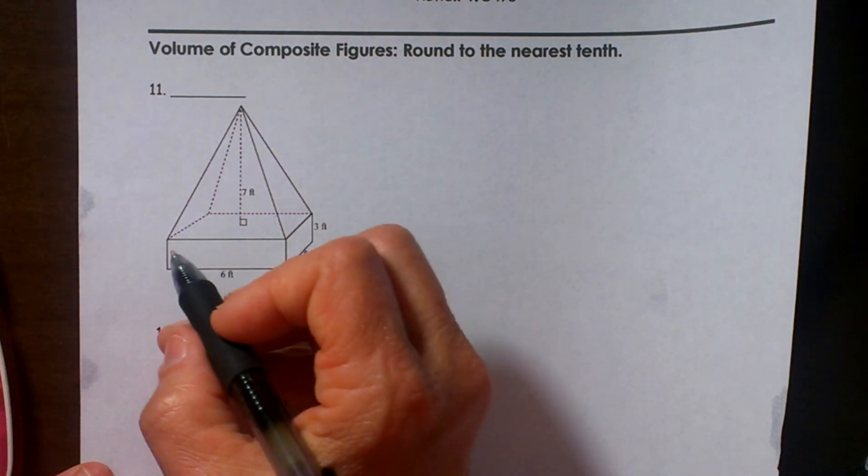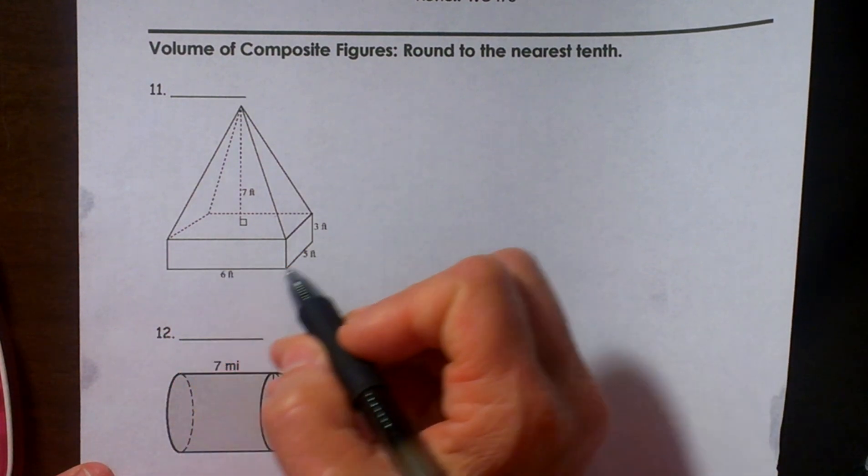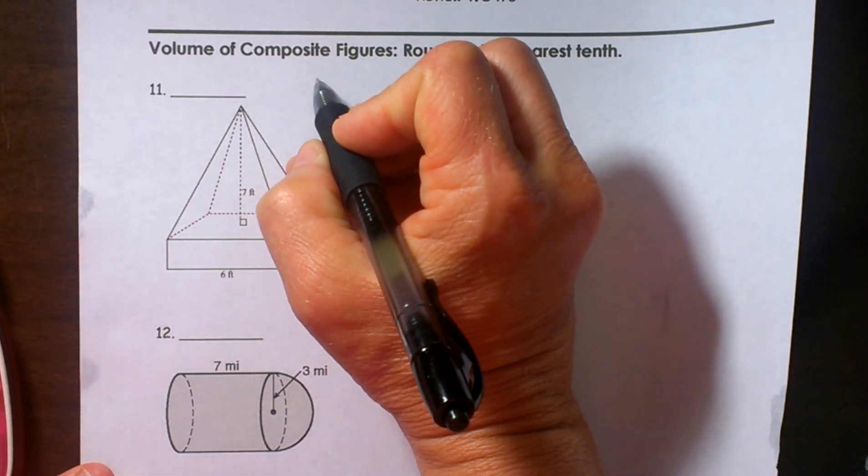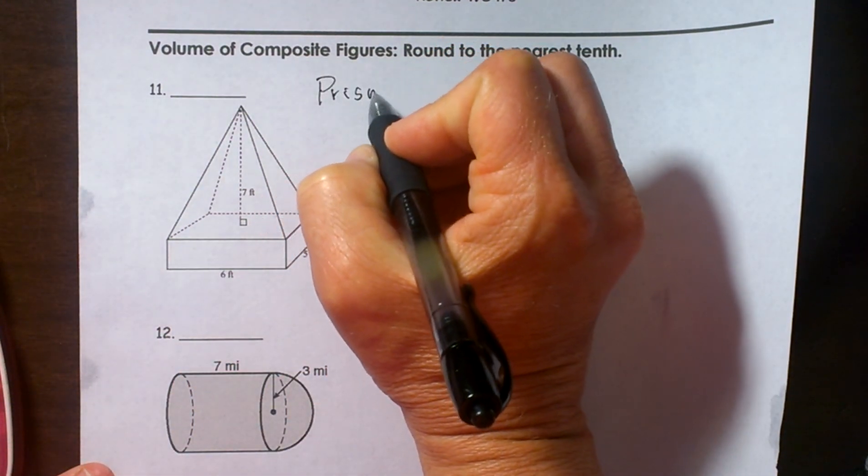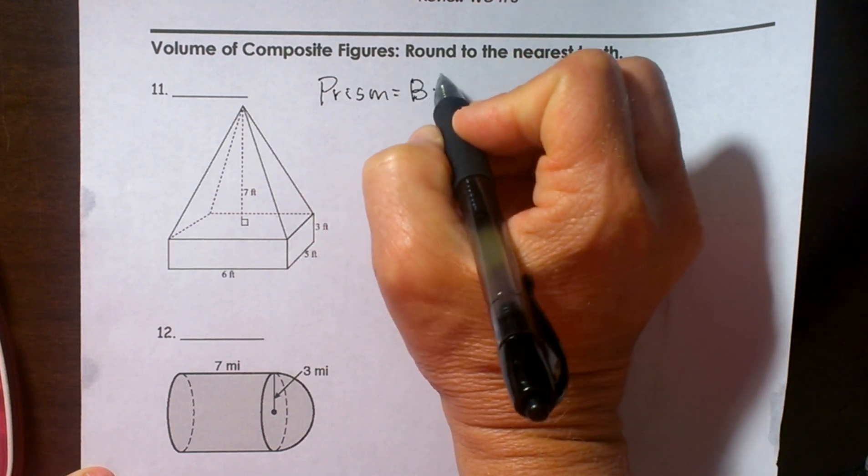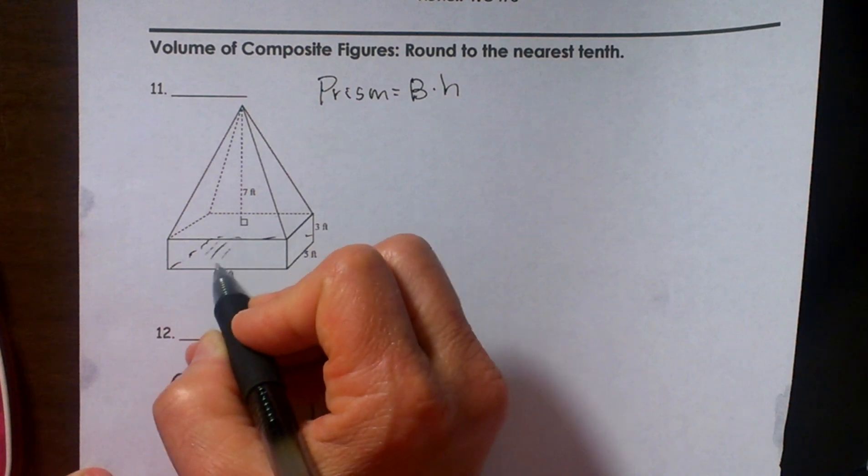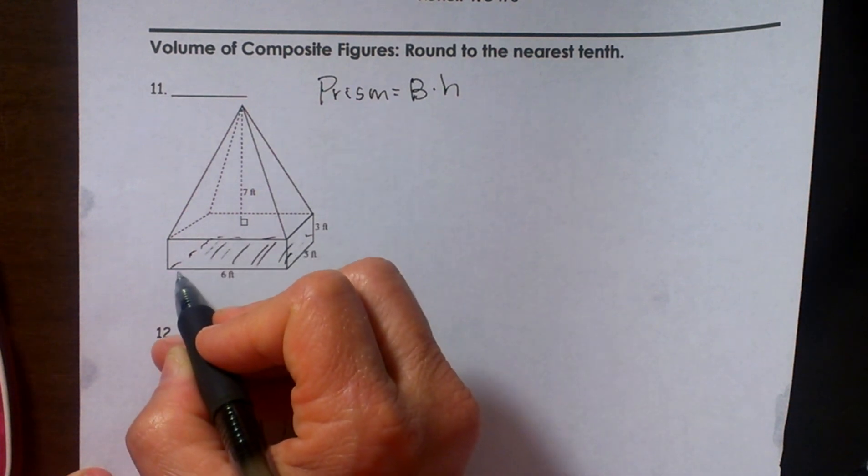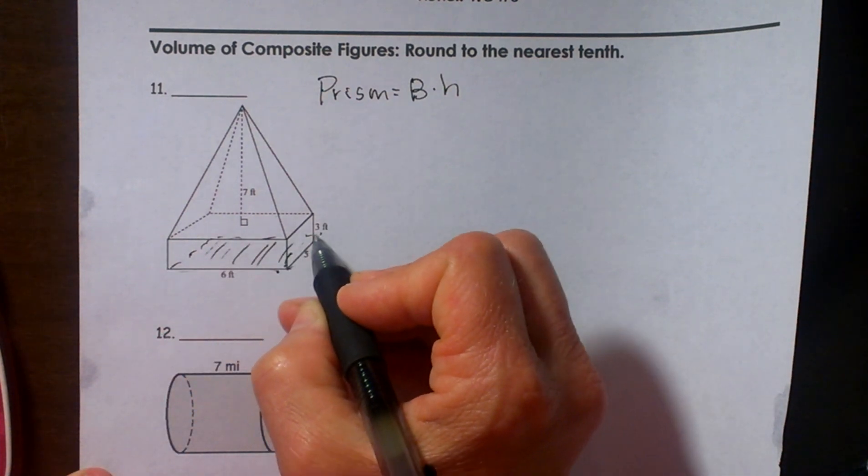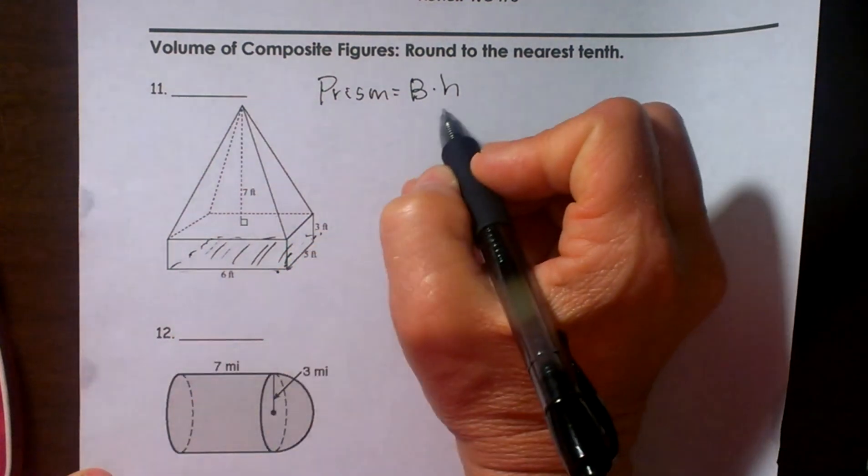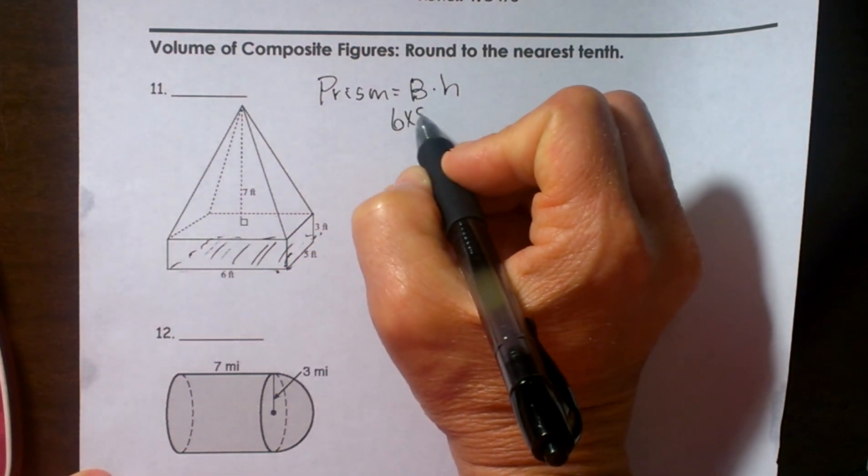Let's do the rectangular prism or the bottom base part. The rectangular formula for a prism is base area times the height. So let's identify our base here. Our base is this shape right here which is 6 by 5, it is a rectangle.